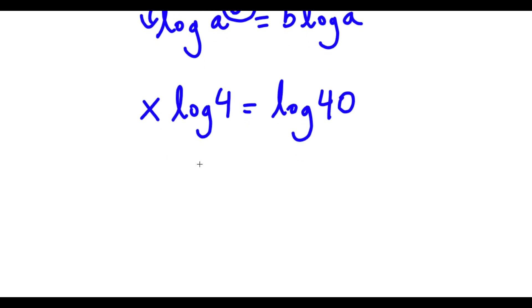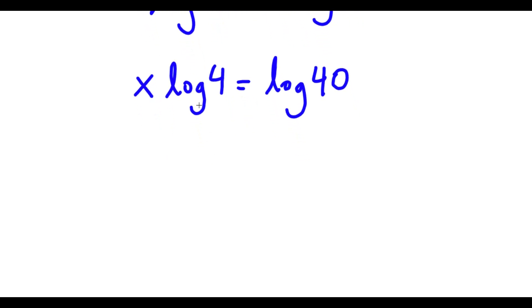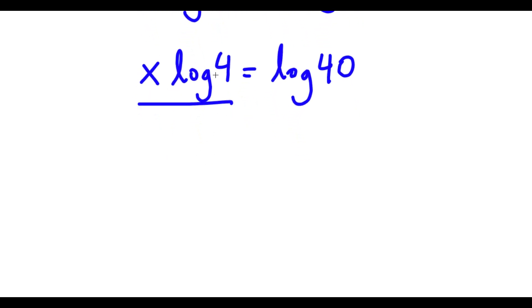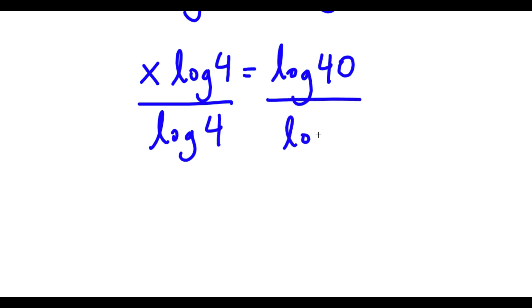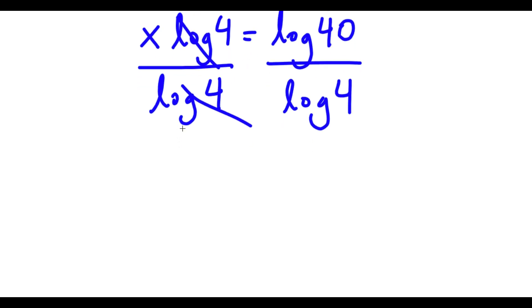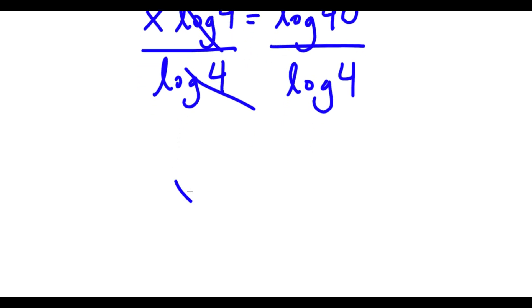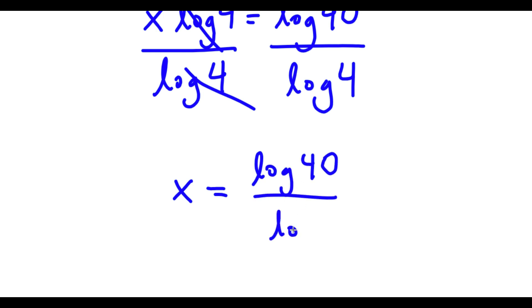Now I'm going to go ahead and divide both sides by log 4. So these two cancel out, and now I have x is equal to log 40 over log 4.